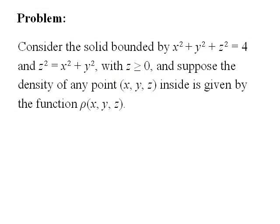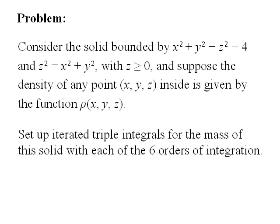This problem is similar to problem number one on the ice cream cone. We have the same solid, bounded by x squared plus y squared plus z squared equals 4, and z squared equals x squared plus y squared, with z greater than or equal to 0. In this case, the density of any point x, y, z inside is given by the function rho of x, y, z. Unlike the previous problem, we are to set up iterated triple integrals for the mass of this solid with each of the six different orders of integration.